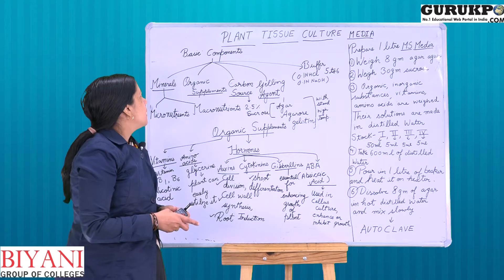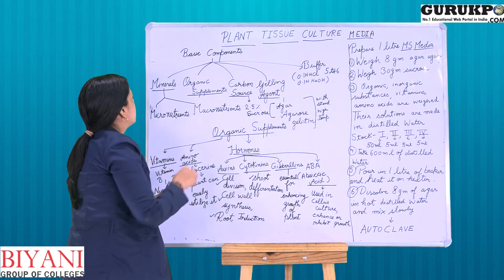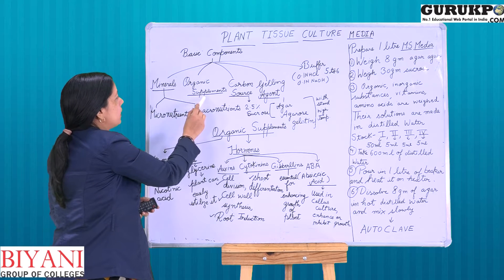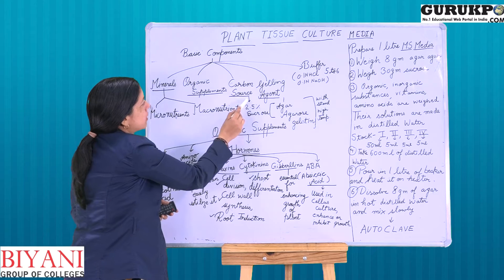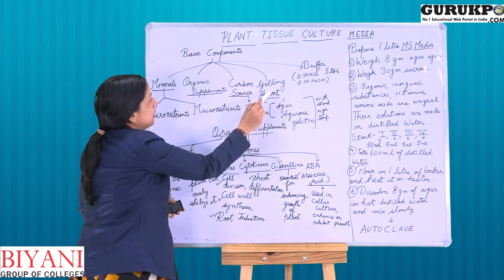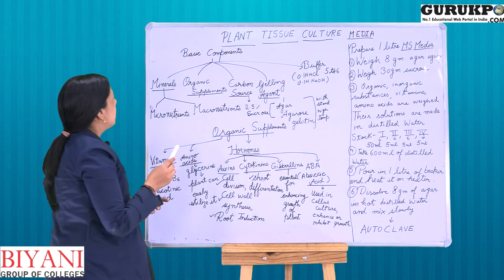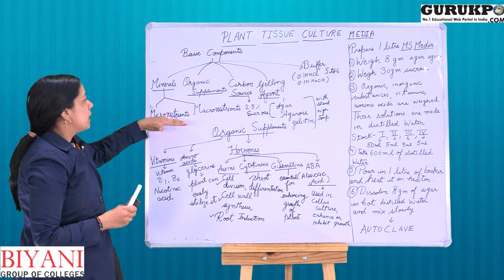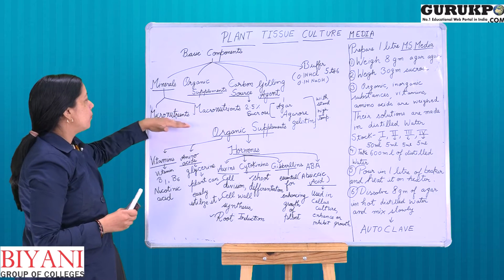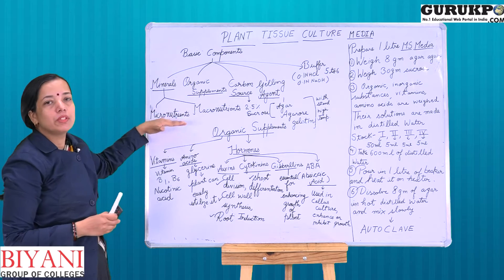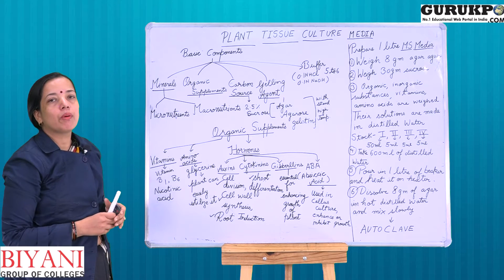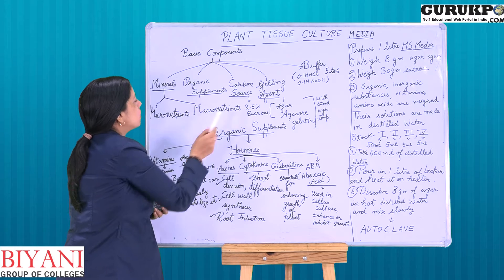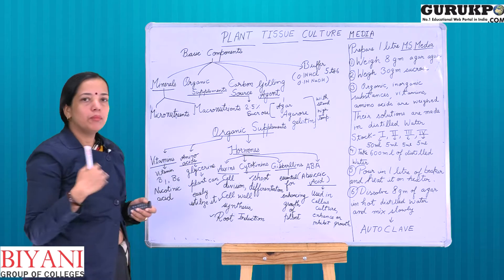The basic components of plant tissue culture media include minerals, organic supplements, carbon source, gelling agent, and buffering agent. The minerals include micronutrients and macronutrients. Micronutrients are those mineral salts required in small quantities, whereas macronutrients are those mineral salts required in larger quantities.